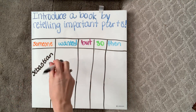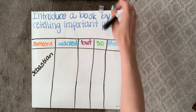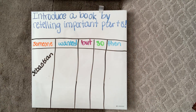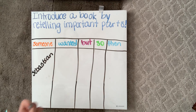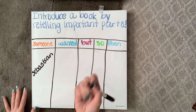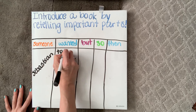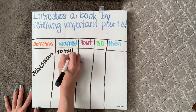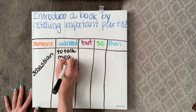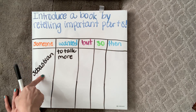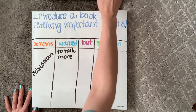Our next column is wanted. This is what did the character want in the story? What did they want to do? What did they want to accomplish? And so in Sebastian's case, he wanted to talk more. So I'm going to put 'to talk more' in our wanted column. That is what Sebastian, our someone, wanted in our story.